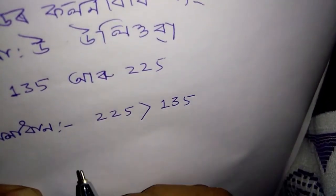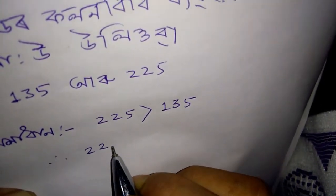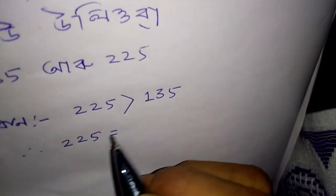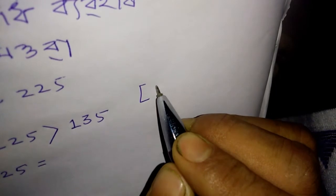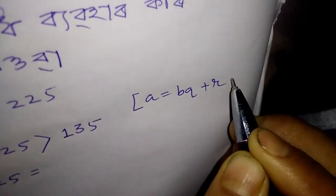Telling the number 1, I can write. I am going to take a look at Euclid algorithm, a equal bq plus r.